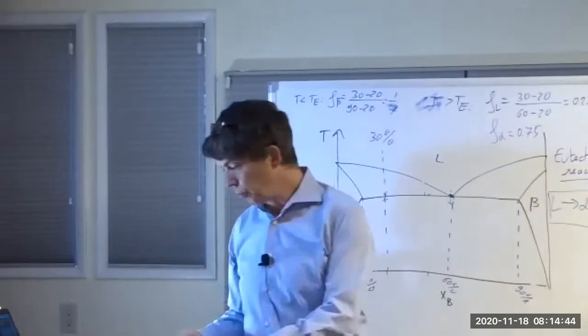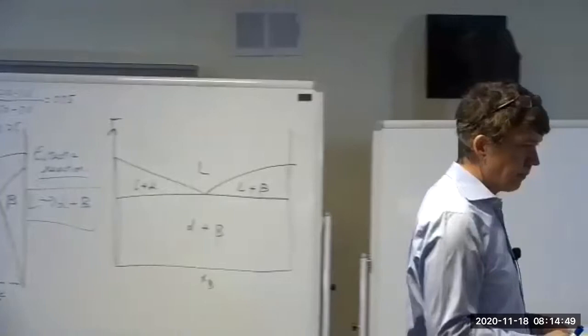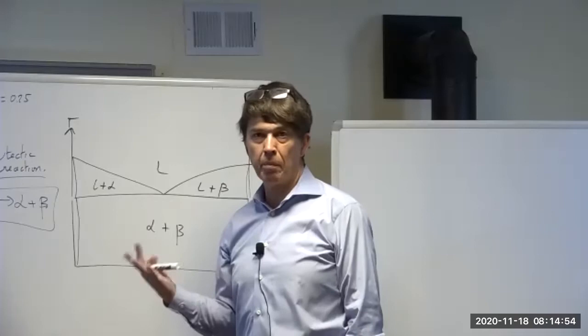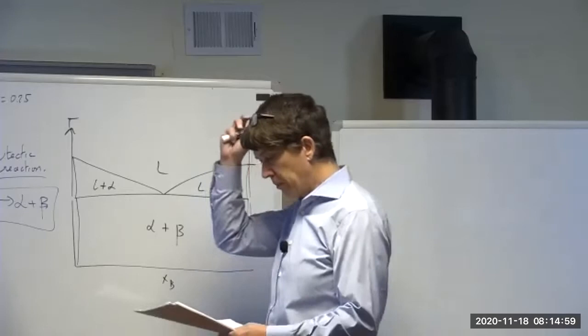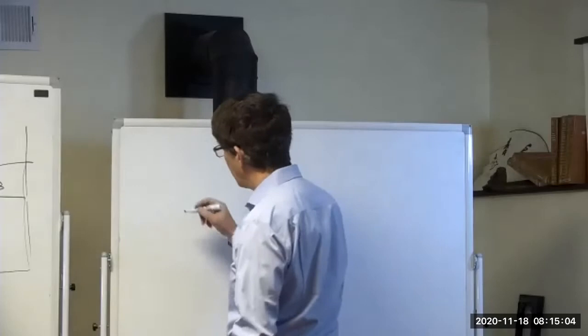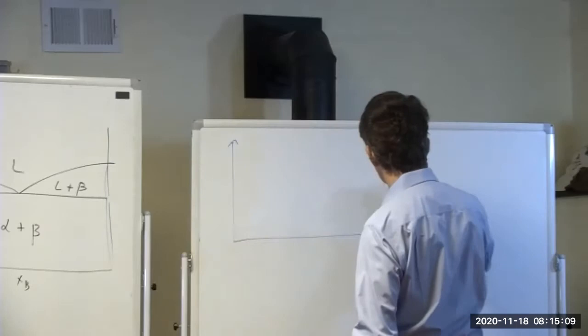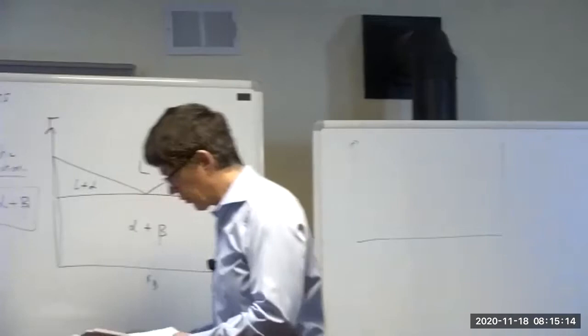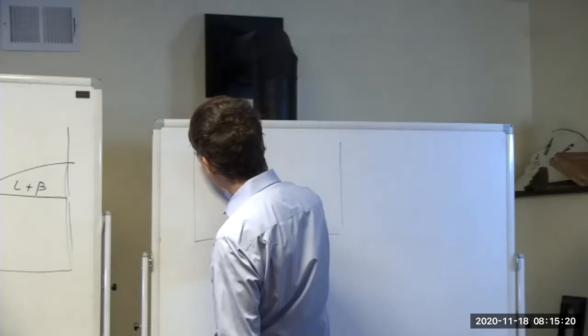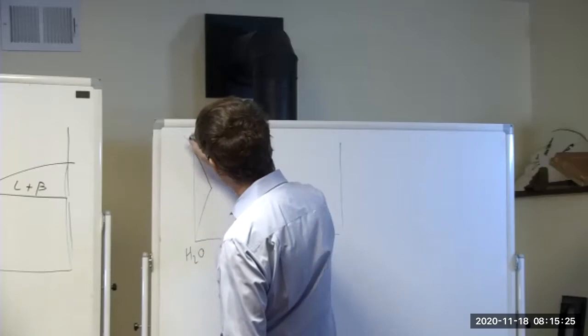Eutectics are tremendously important technologically because they allow you to create lower melting points than any of the pure end members. We talked about ethylene glycol, solder, and the one that has come up when discussing melting point lowering — water and salt. The water-salt system is actually a eutectic. The melting point of pure H₂O is 0°C, and as you add salt the melting point is depressed.